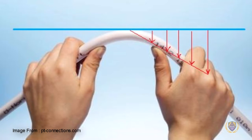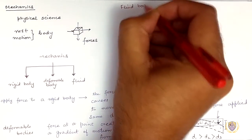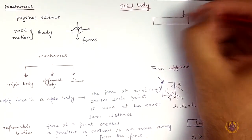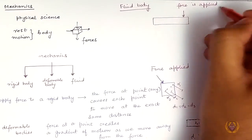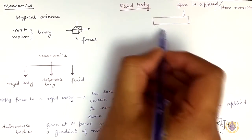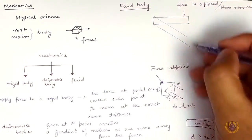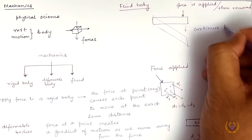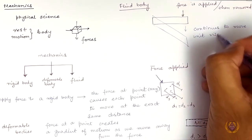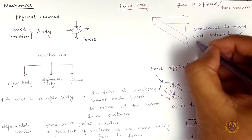The same can be seen in the case of bending a rod. For a fluid body, when a force is applied through a body and then removed, the body continues to deform until parameters such as viscosity or friction resist it from doing so.